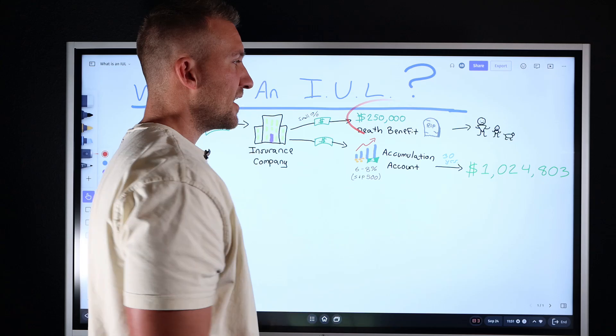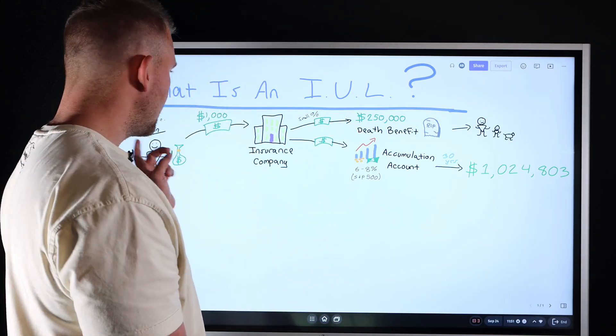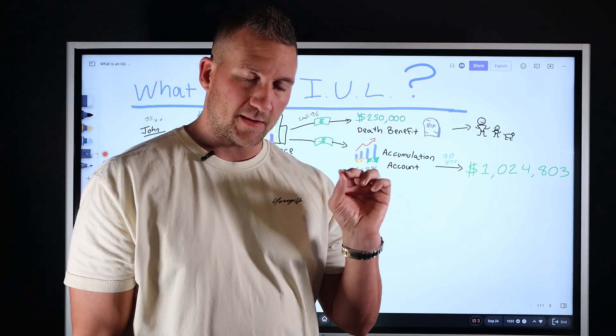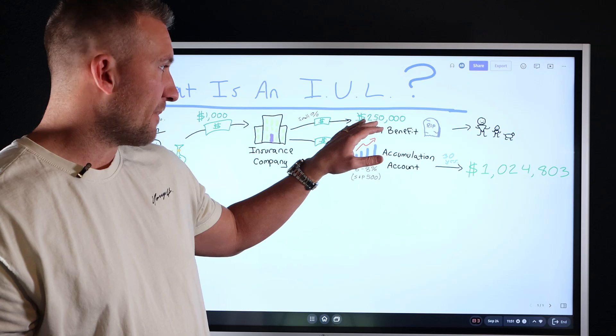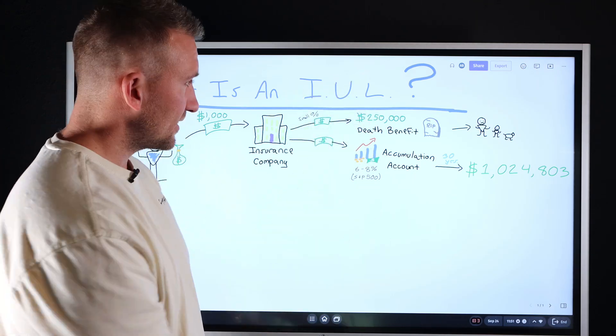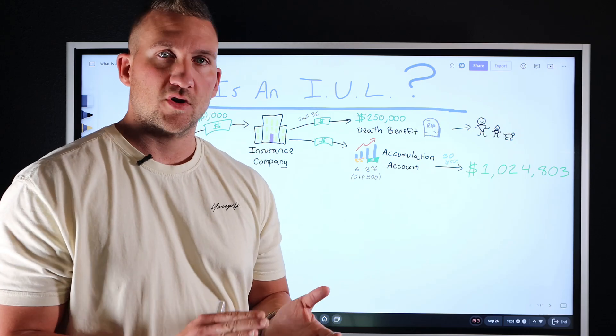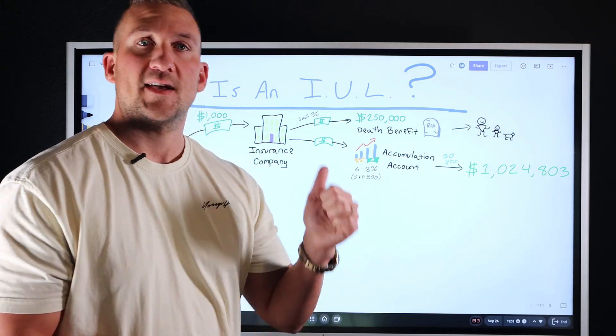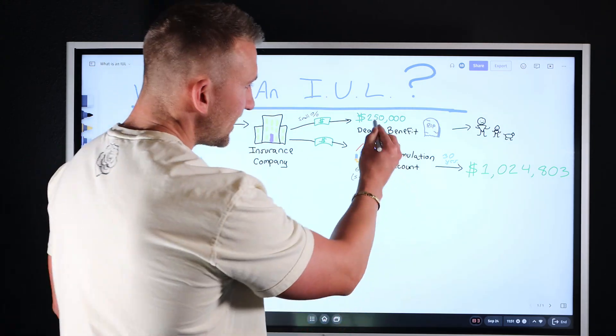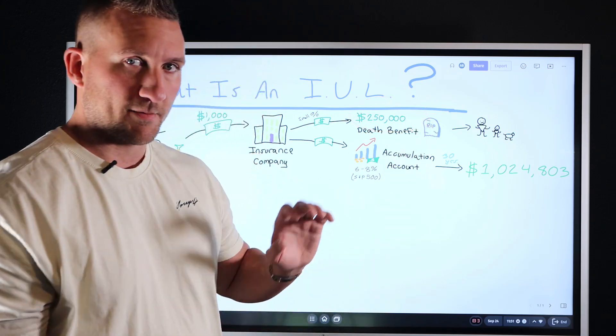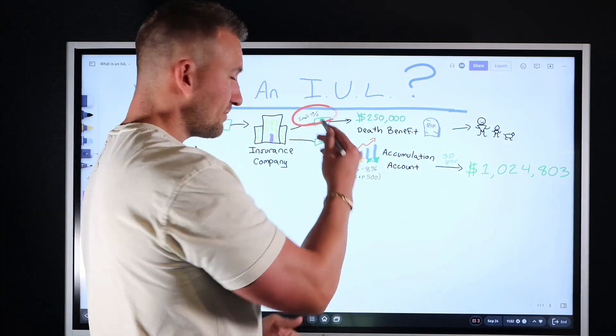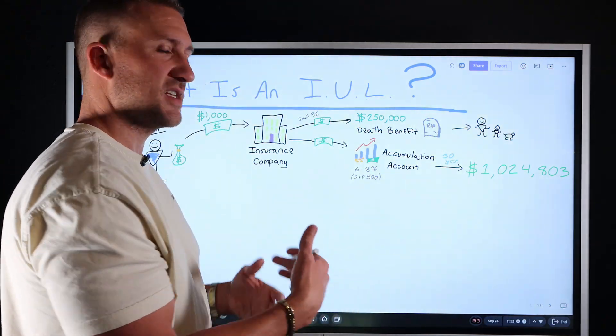In return, the insurance company is going to give John a death benefit, an immediate death benefit of about a quarter million dollars. Hypothetically, he's going to get $250,000. God forbid John gets sick, stroke, heart attack, cancer, death, needs long-term care. He has $250,000 that's immediately there.